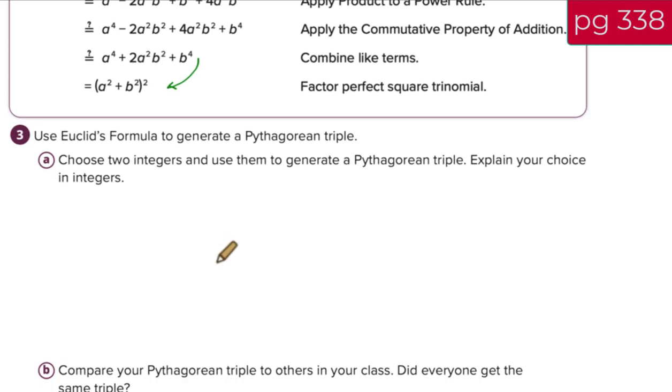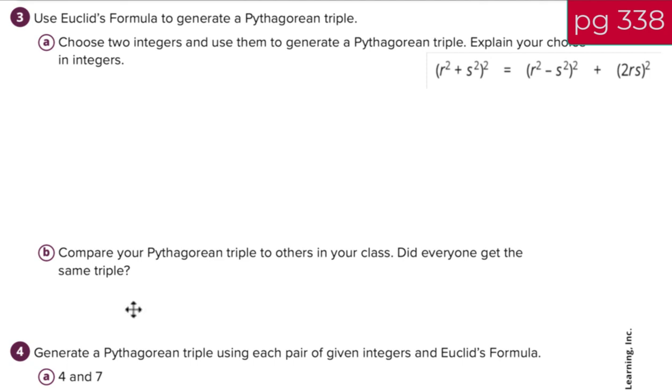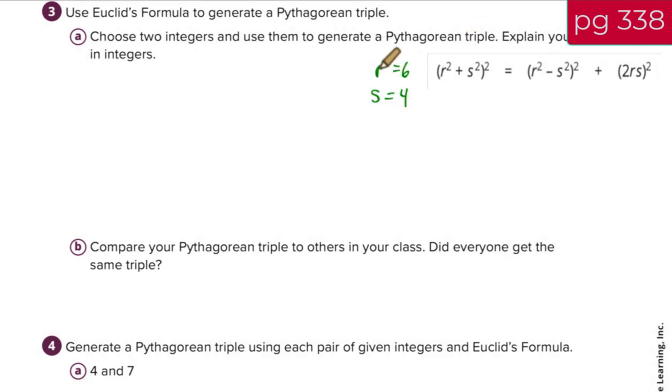Let's look at 3A. Use Euclid's formula to generate a Pythagorean triple. So I'm going to use Euclid's formula. I'm going to write down what that is. So here's that amazing formula, and I'm going to choose two integers. So what if I choose R to be 6 and S equals 4? Which Pythagorean triple set will these two integers generate? So let's figure it out right now.